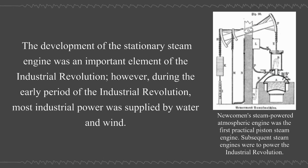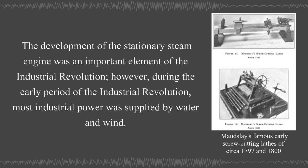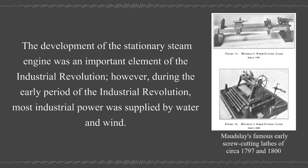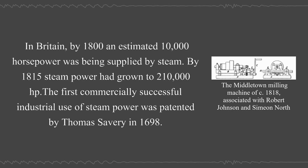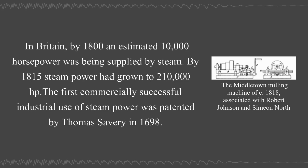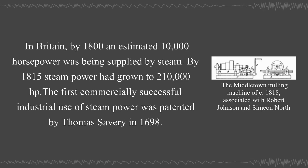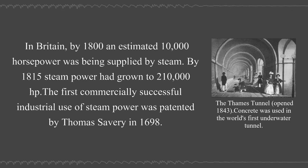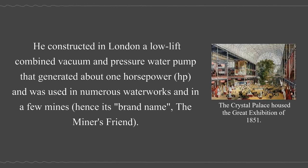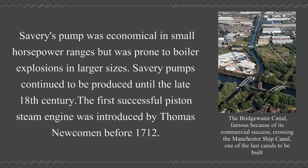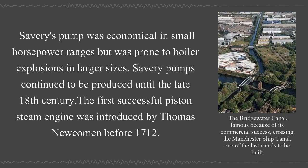The development of the stationary steam engine was an important element of the Industrial Revolution. However, during the early period, most industrial power was supplied by water and wind. In Britain by 1800, an estimated 10,000 horsepower was being supplied by steam; by 1815, steam power had grown to 210,000 hp. The first commercially successful industrial use of steam power was patented by Thomas Savery in 1698—he constructed in London a low-lift combined vacuum and pressure water pump that generated about one horsepower, used in numerous waterworks and mines under its brand name 'the miner's friend.' Savery's pump was economical in small horsepower ranges but was prone to boiler explosions in larger sizes, and continued to be produced until the late 18th century.